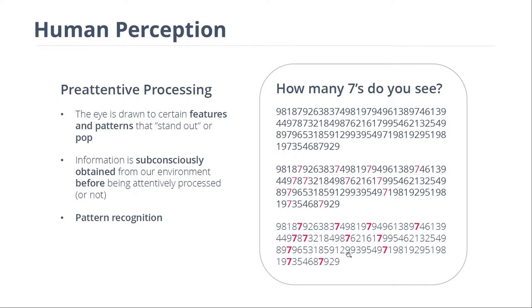And then finally, if I not only make the sevens a different color but also make them bigger and bolder, you don't even have to go number by number. You don't have to think about it at all — you can just count them instantly. That's the pre-attentive process in action.